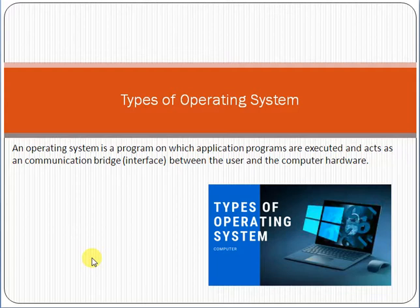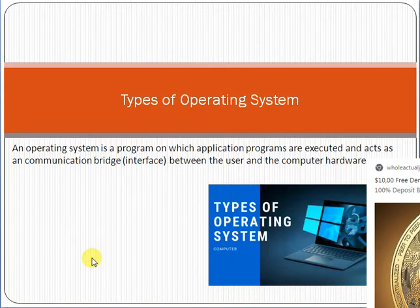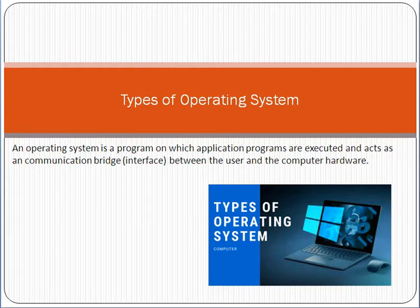First of all, we have to understand what an operating system actually is. In a computer, the operating system is basically a program which loads at a very initial stage whenever you switch on the computer. Basically, the operating system is a communication bridge or interface between the user and the computer hardware. For example, when you instruct the computer to print a document, that instruction goes to the printer — which is hardware — through the operating system.